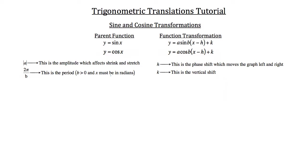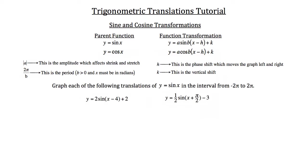x must be in radians. The h is the phase shift, which moves the graph left and right, and k is the vertical shift, which moves the graph up and down. That same set of transformations applies to the parent function y = cos(x), which looks like y = a·cos(b(x - h)) + k. Those values of a, b, h, and k apply the same as they did for the sine functions. The easiest way to work with these is to go through practice problems.